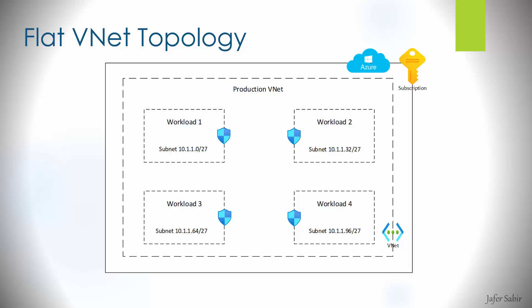The next example is the flat VNet topology — a nice, simple one. It's a single VNet with subnets, where NSGs provide segregation and traffic control. You have workload 1, workload 2, workload 3, workload 4 as individual subnets, with NSGs providing access control between them.